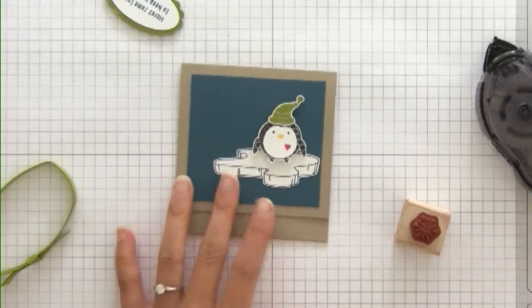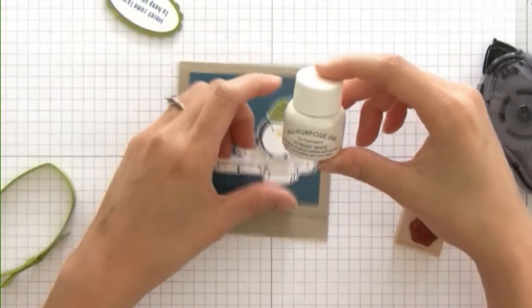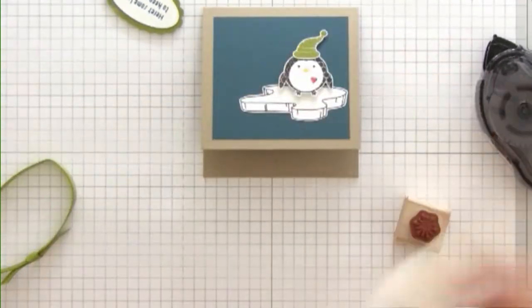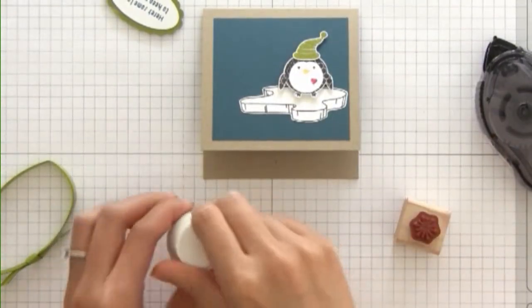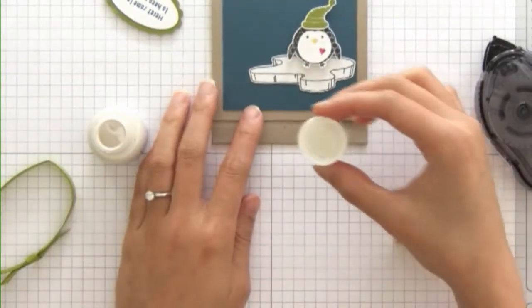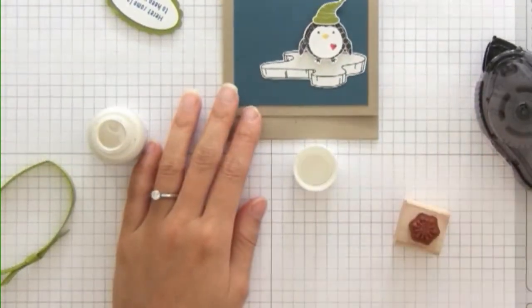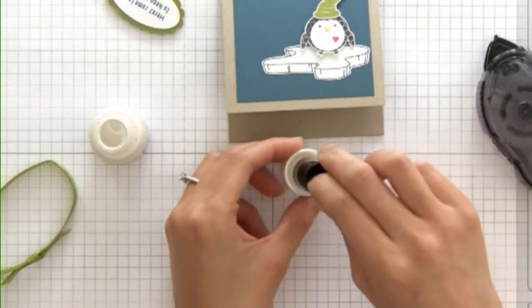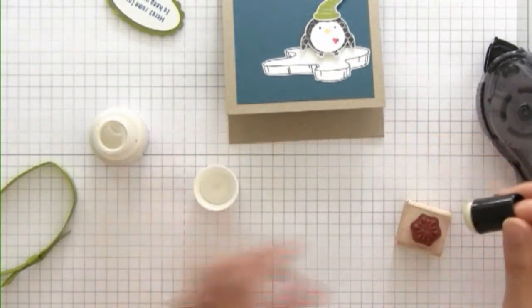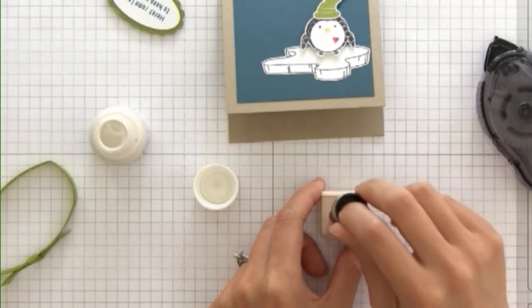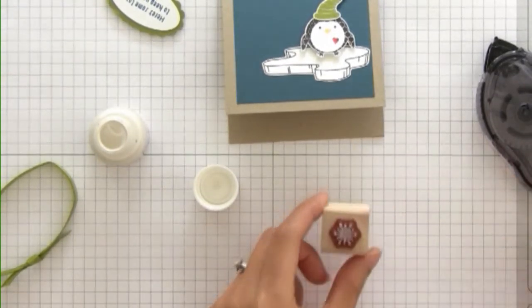I'm actually going to take some of our new shimmer paint from the Holiday Mini Catalog. This is the Frost White color. I'll open it up and there will be a pool of ink on the inside of the lid. You can just take one of our sponge daubers, pick up some ink, and dab it on the stamp.